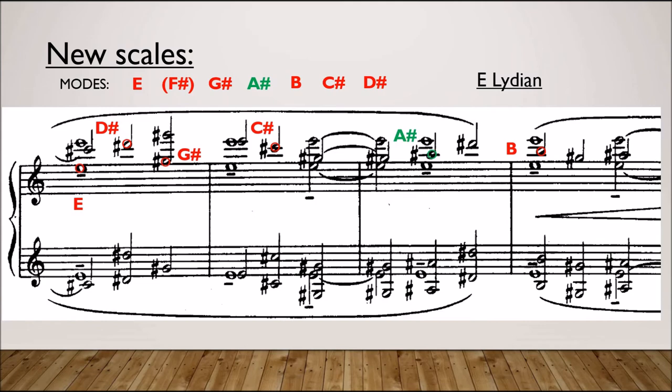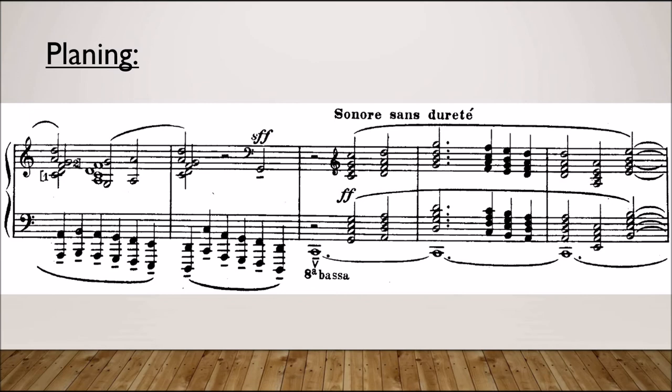Another new technique that we've actually already seen in this video is called planing. In this technique, all voices move in parallel motion with identical voicing and spacing. This excerpt comes from later in the sunken cathedral. Notice how Debussy takes this first C major chord and moves it up and down, following the melody. This is an example of diatonic planing. Each chord is a triad, but sometimes it is major and sometimes it is minor, staying within the given mode, in this case C Ionian.